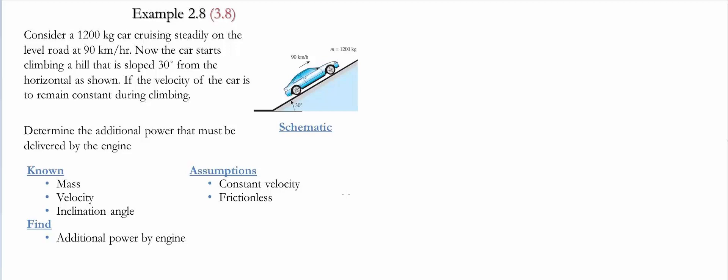In this example we have a car of 1200 kilograms which is cruising steadily on a level road at 90 kilometers per hour. The car starts climbing a hill at a slope of 30 degrees from the horizontal axis as it is shown.